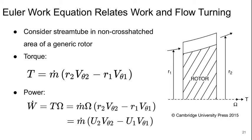The Euler turbine equation is the fundamental equation of turbomachinery and relates to the work and flow turning. We did see this in aero fundamentals, but I want to introduce it again now. So we'll consider some stream tube in this non-cross-hatched area of a generic rotor. The torque associated just from angular momentum theorem is the mass flow rate times R, R tangential velocity difference. So the angular momentum change. The power is just that torque times the angular velocity. So when we put that all together, we define U, uppercase U, as a blade speed, which is a radius times the angular velocity. Then we get ṁ times u2 vθ2 minus u1 vθ1.